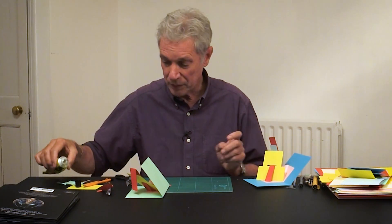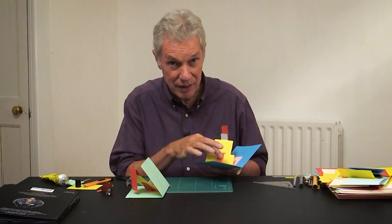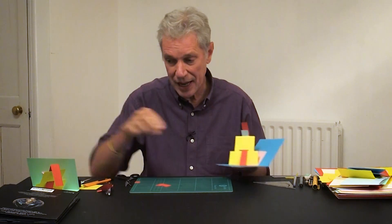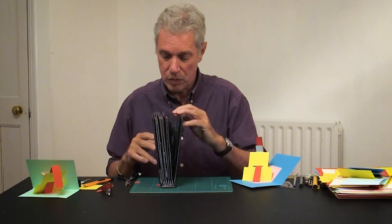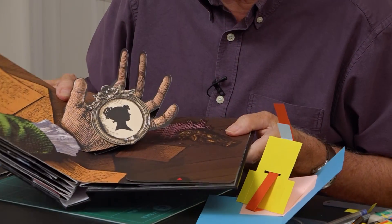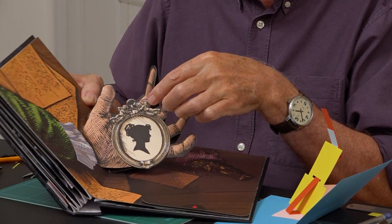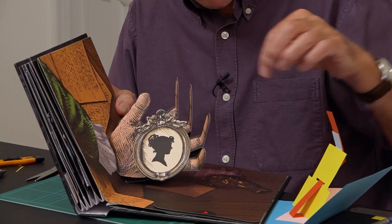The other clever thing with this book is this mechanism is hidden in David Pelham's design. So I'll just show you how he's done that. When the page opens, you see that the hand is actually holding a locket.